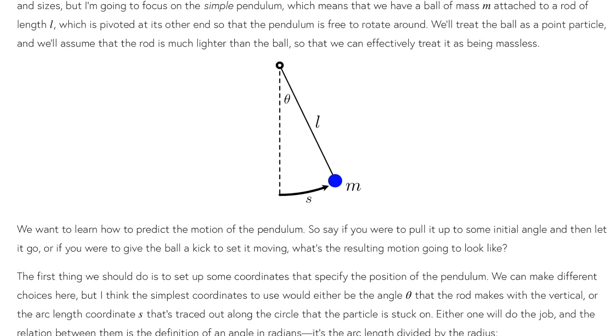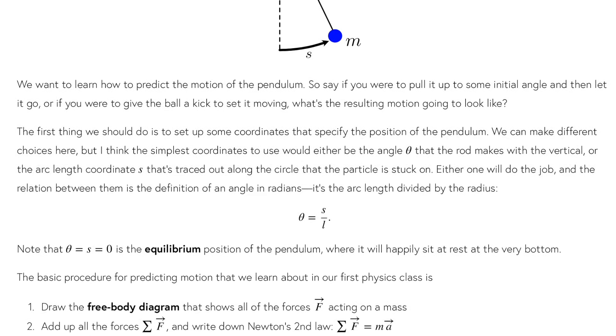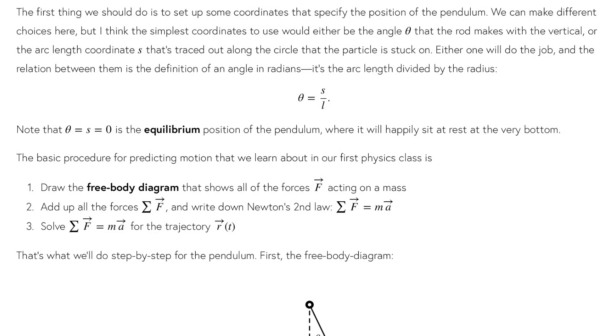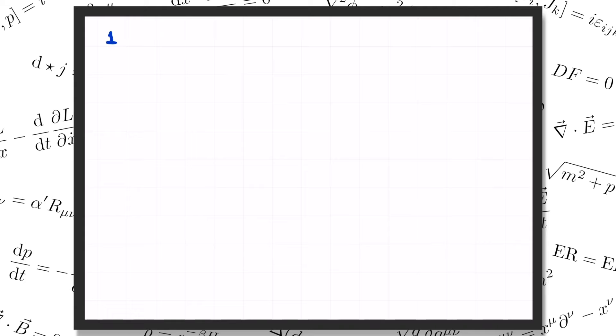By the way, I've written up some notes to go along with this video that I'll link below. So step one is to draw the free-body diagram, which is just a picture that shows all of the forces acting on the particle. There's only two forces in this particular case. We've got gravity mg pulling straight down, and we have the tension T in the rod pulling back toward the center of the circle.